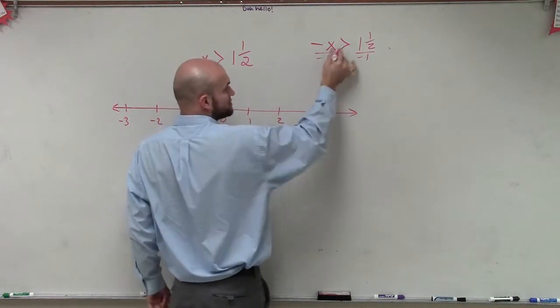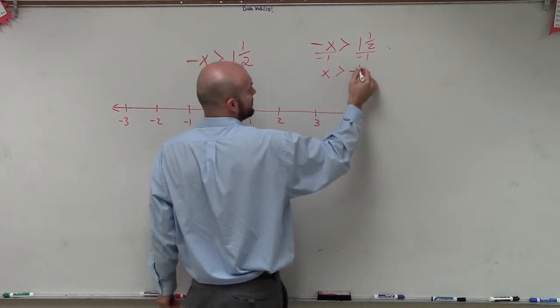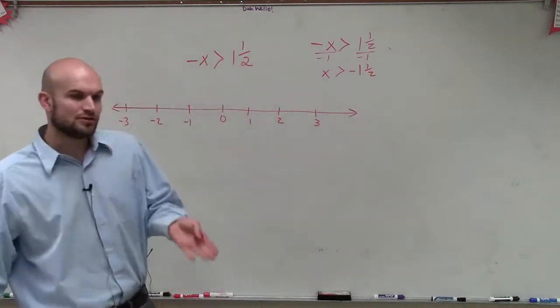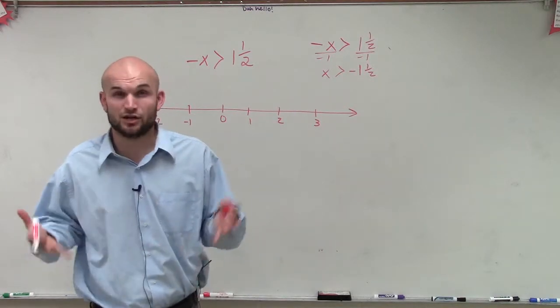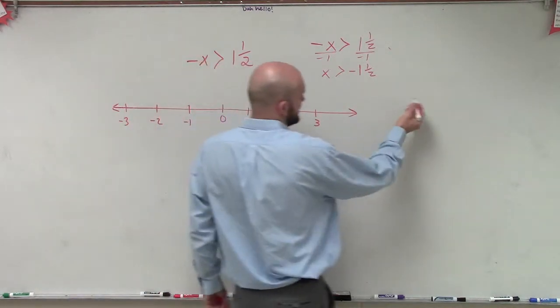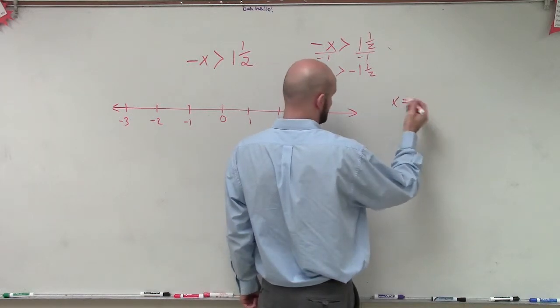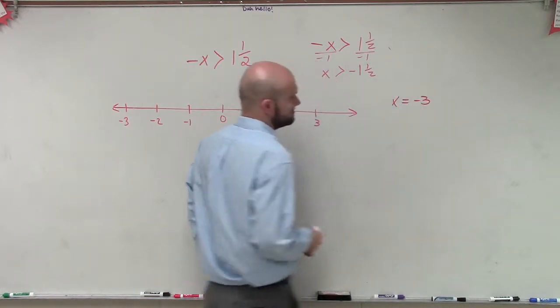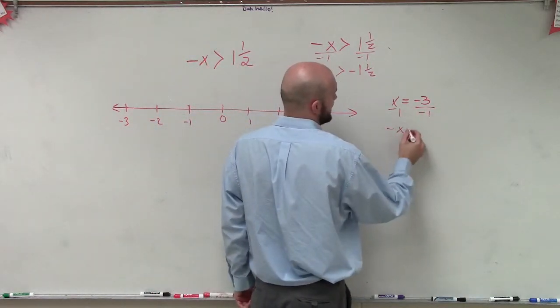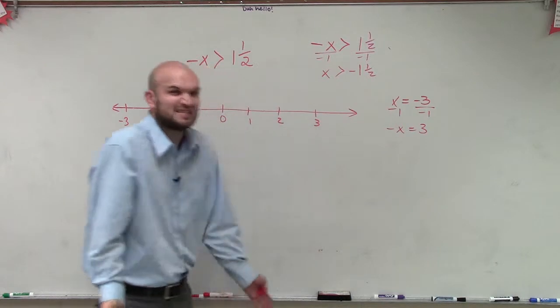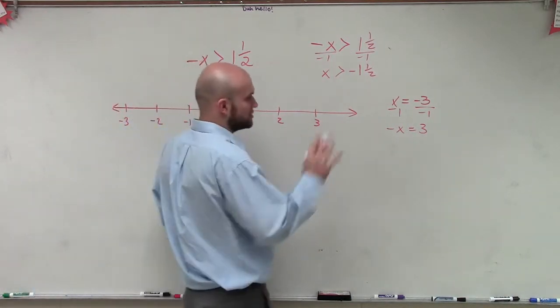Now, usually with equations, we didn't have to deal with an inequality sign, so we would just think it'd be negative 1 and 1 half. But let's make sure that this is true, because remember, whatever I do on one side, as long as I do it on the other, it still should be true. If I had x equals negative 3, I could also divide by negative 1 and say negative x equals 3, right? And that's exactly the same thing. However, it doesn't work that exact same way for inequalities, and I'll show you why.